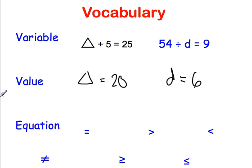Now a value is simply what the variable stands for. So you might hear, find the value of the triangle. So the value of the triangle is 20. Or you might see, find the value of the variable, or d. So the value of d equals 6. It's just what it stands for.